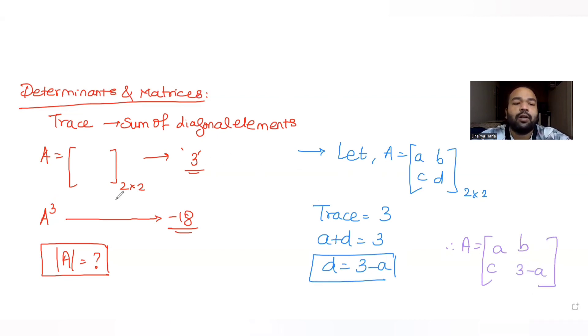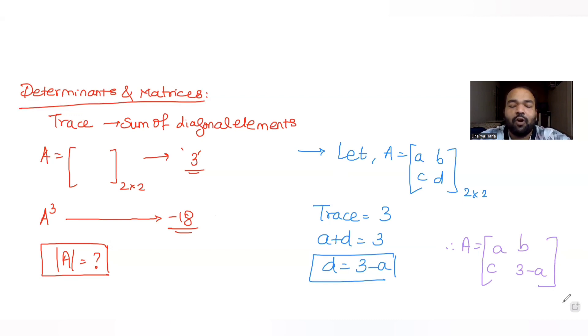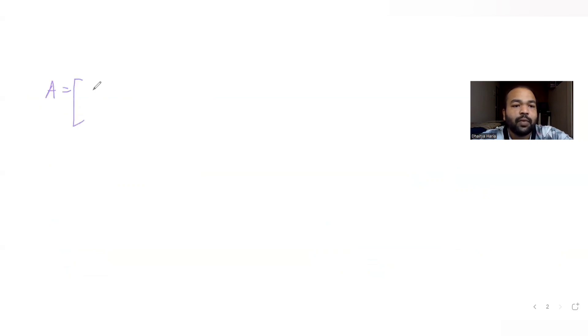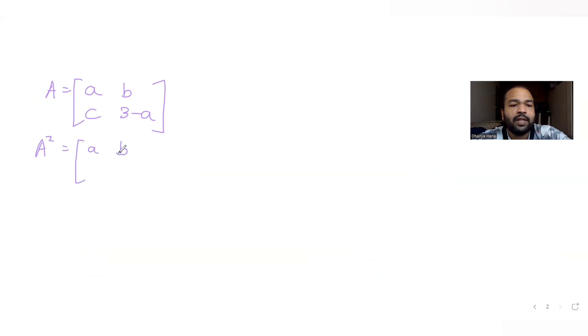I also know that the trace of matrix A³ is minus 18. So first of all, let's find A³. If I want to find A³, I will have to multiply matrix A three times. First of all, I'll find A² by multiplying the same matrix two times.